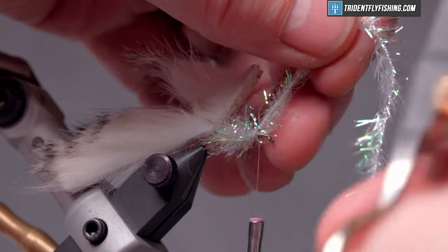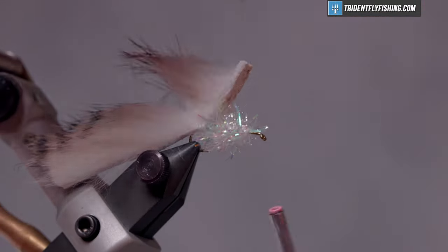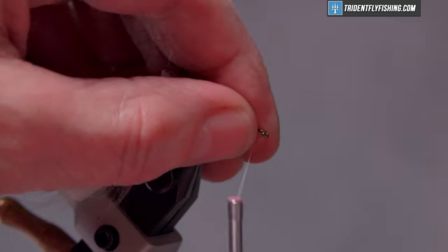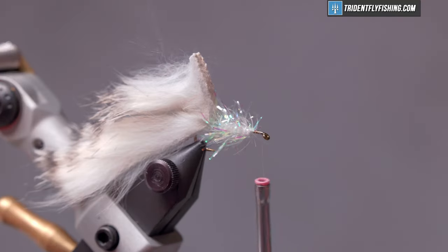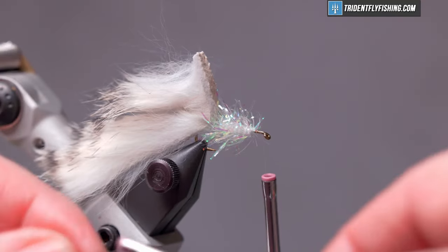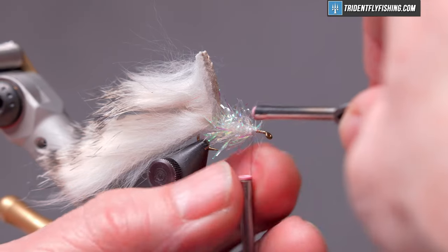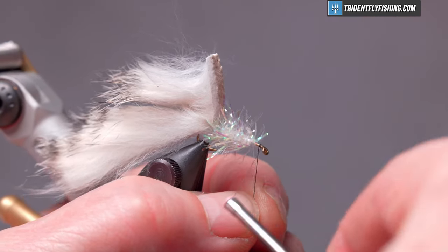Cut off our excess and at this point I'm going to change threads. We're going to go with the Anvil 6-0 in black so that the fly has a black head.